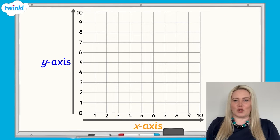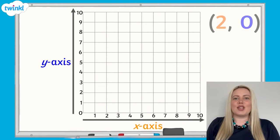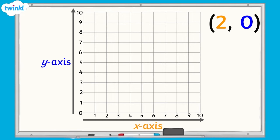Where would we plot the coordinates 2, 0 on the grid? We need to find 2 on the x-axis first. Because the y-axis coordinate is 0, we do not need to move up the y-axis beyond 0, and we can plot our point right here on the axis itself.